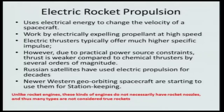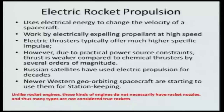However, these devices have their own advantage and specific use. Russian satellites have used electric propulsion for decades, starting from the 1960s, for various applications. Near western geoorbiting spacecraft or spacecraft designed for deep space applications are starting to use these systems, particularly for station keeping — for maintaining the satellite within its course — where small electrical propulsion devices are now being used extensively.